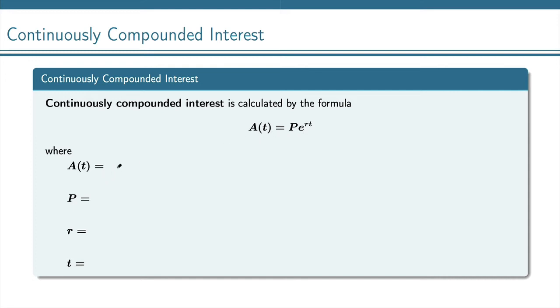A of T is the amount that we have after time T. P is still the principal, or the initial amount. R is the interest rate. And T is, of course, time.